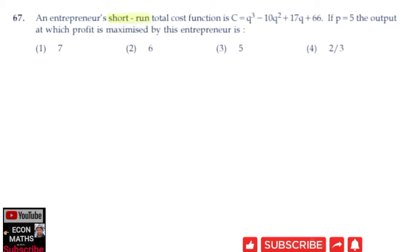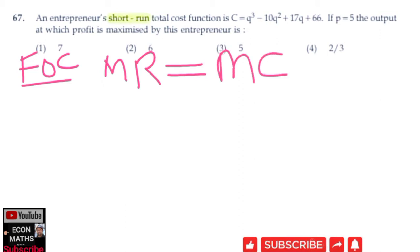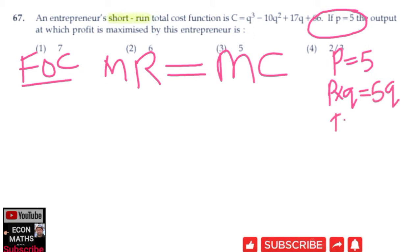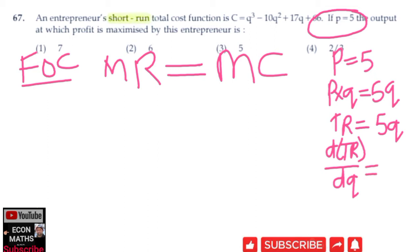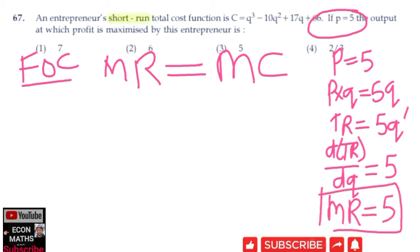First of all, the first order condition for profit maximization requires marginal revenue equal to marginal cost, as we know from economics. Here P = 5, so P × Q = 5Q, which is total revenue. The derivative of total revenue with respect to quantity — that is dTR/dQ — gives us marginal revenue. The derivative of 5Q is 5, so marginal revenue is 5.